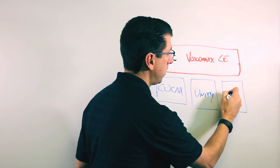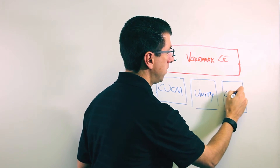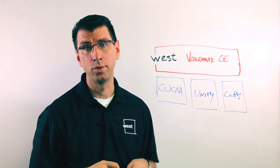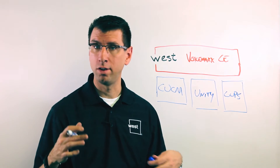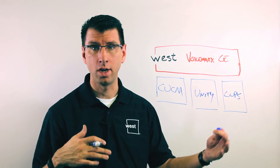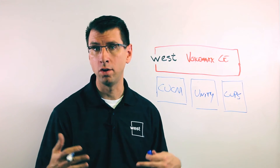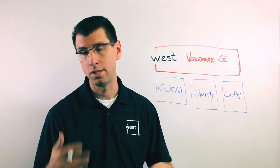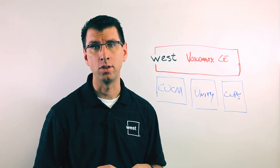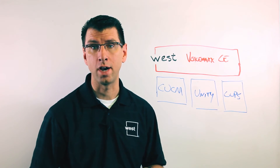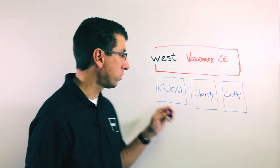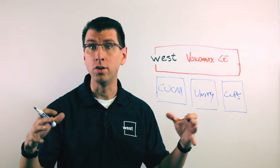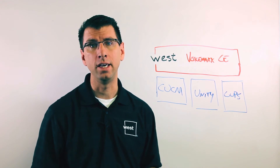The last one is something called CUPS — the Cisco Unified Presence Server. This is what makes sure that when someone's online, you see that they're online, and when they have a call, you see that they're on a call. It facilitates all the instant messaging and presence information that you find in Cisco Jabber. So those are the three key Cisco technologies that are underneath VoiceMax CE.